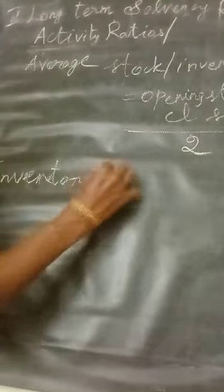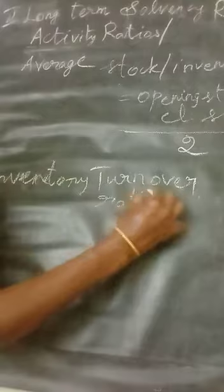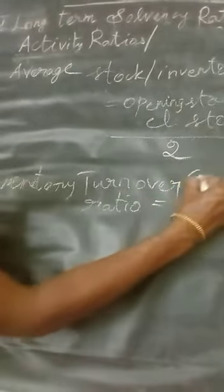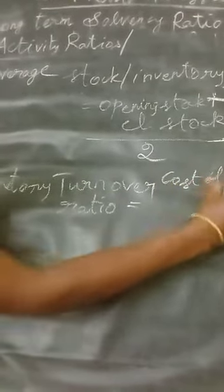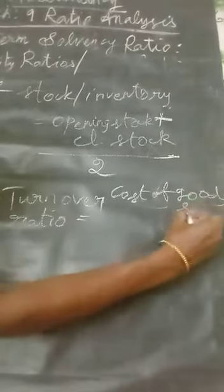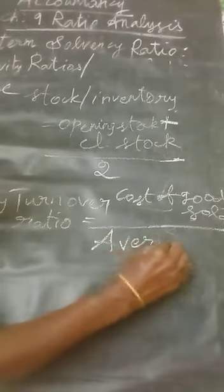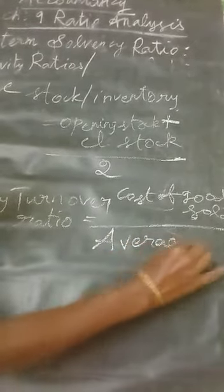Inventory turnover ratio is cost of goods sold divided by average stock. Let us see the illustration.